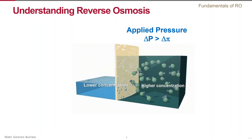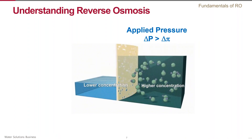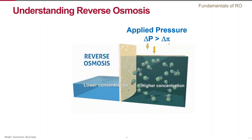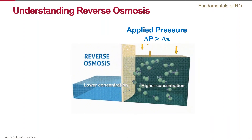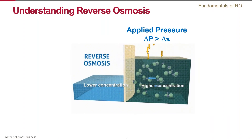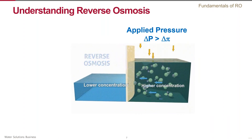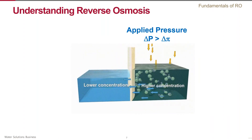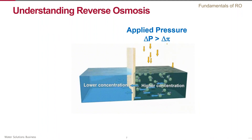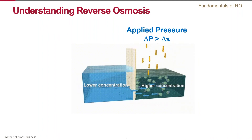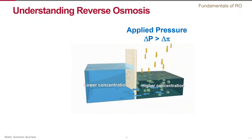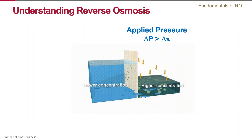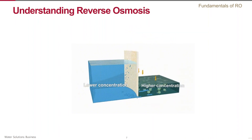This applied pressure forces water to pass through the membrane in the opposite direction. Water now moves from the compartment with the high-concentration solution to that with the low concentration. As a result, the water in one compartment is purified and the solids in the other compartment are concentrated.